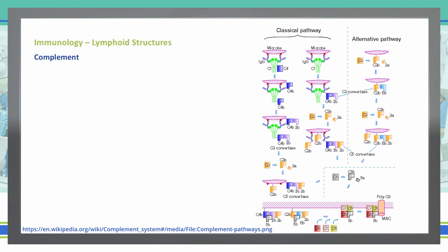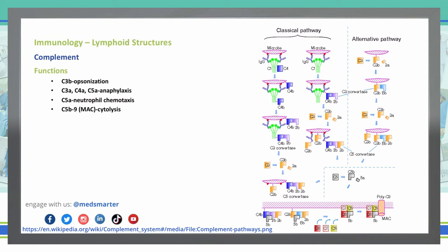Let's talk about the function of some of these complement components. C3B functions in opsonization — the process where opsonins tag foreign pathogens for elimination by phagocytes. As you can see in the diagram, C3 is cleaved and C3A breaks off, leaving C3B to bind to the molecule and target it for elimination. Without opsonins like antibodies, the negatively charged cell walls of the pathogen and phagocytes repel each other, so C3B opsonization is necessary.